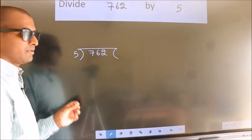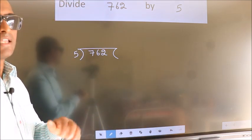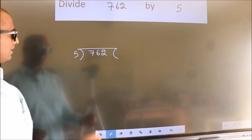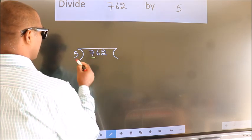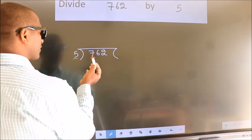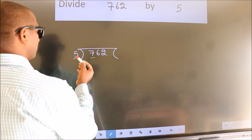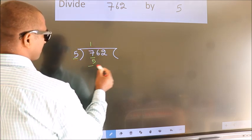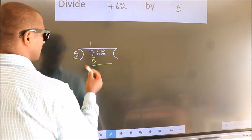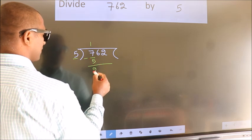This is your step 1. Next, here we have 7, here 5. A number close to 7 in the 5 table is 5 once 5. Now we should subtract. We get 2.